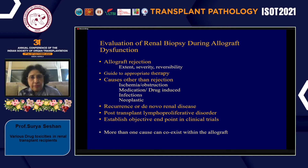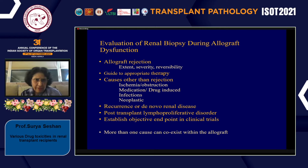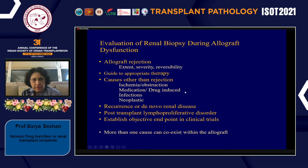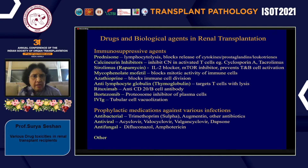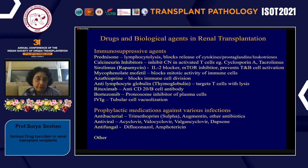When you evaluate a renal biopsy during allograft dysfunction, a variety of conditions have to be considered — allograft rejection and repeated biopsies to guide therapies, but also causes other than rejection that can cause renal dysfunction, including medication and drug-induced toxicities. Given the wide variety of immunosuppressive agents, biological agents, and prophylactic medications these patients receive, it is surprising that drug toxicity does not occur more often than what we see now.